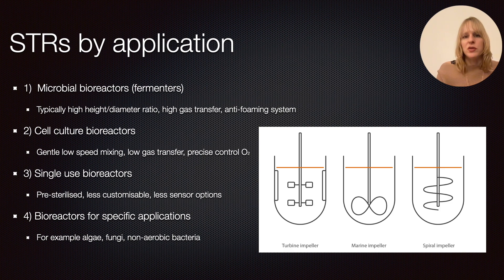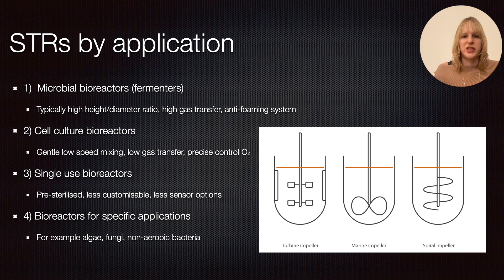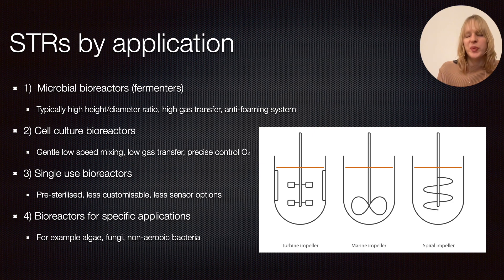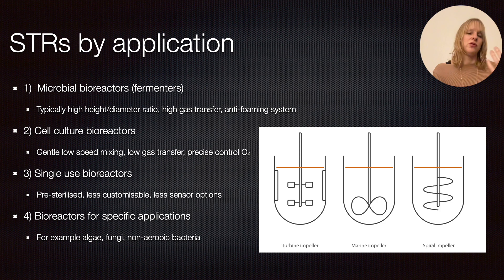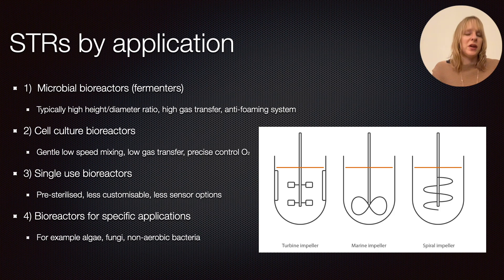For cell culture systems you need very precise control over oxygen because the cells are much more sensitive to it. You also control pH differently — mammalian cell culture systems are very sensitive to pH. Whereas a microbial bioreactor typically uses an acid-base feedback system, in cell culture it is much more common to use carbon dioxide to regulate pH.